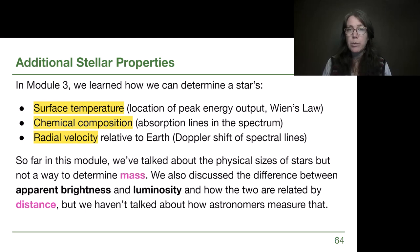In Module 3, especially when we were thinking about Chapter 5 from OpenStax Astronomy, three of the big things that we learned how to do was to figure out a star's surface temperature by figuring out the location of the peak energy output in the black body curve, applying Wien's Law either as an equation or as an idea. We learned how to determine a star's chemical composition, so what elements are present, and by looking at those absorption lines they can even categorize stars into different spectral types.